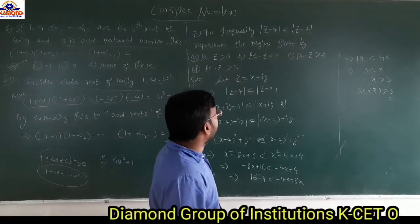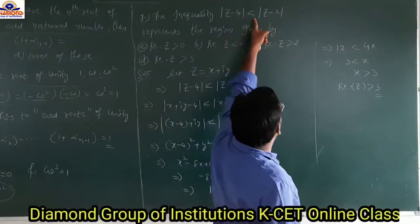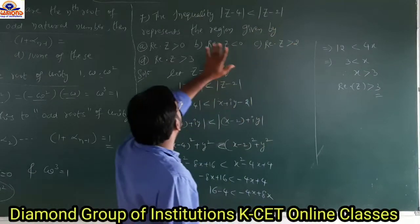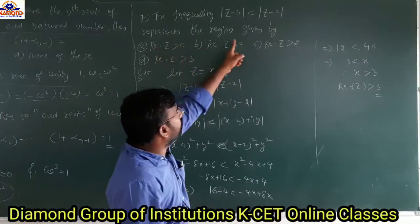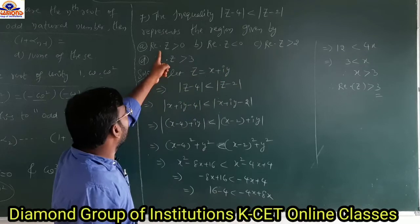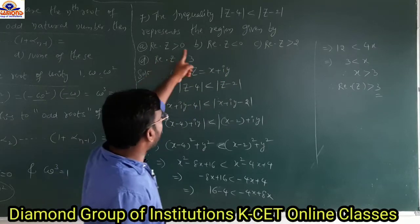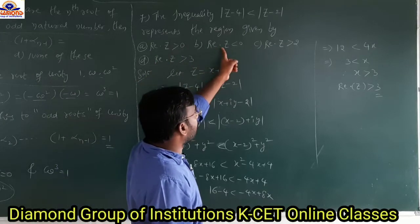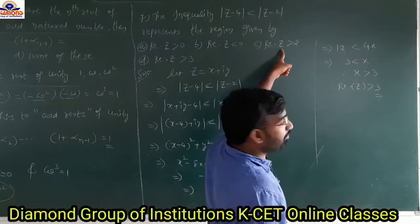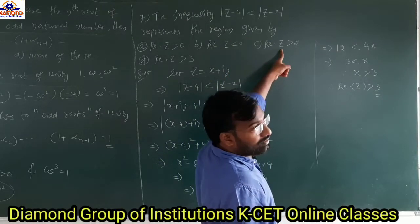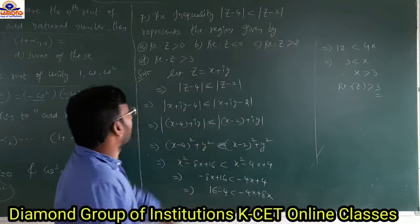The inequality |z minus 4| is less than |z minus 2| represents the region given by: option A, Re(z) greater than 0; option B, Re(z) less than 0; option C, Re(z) greater than 2; option D, Re(z) greater than 3.